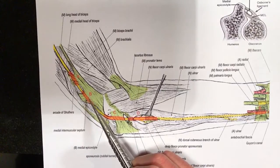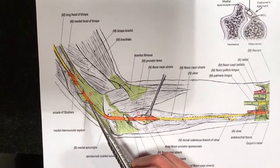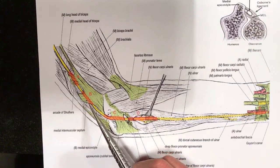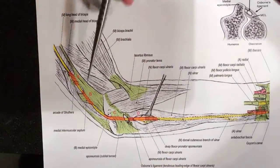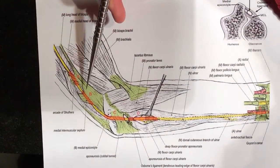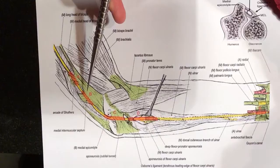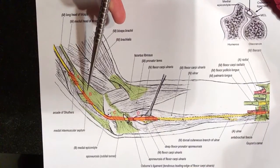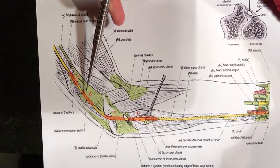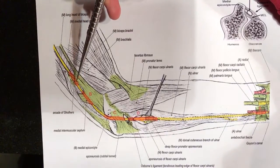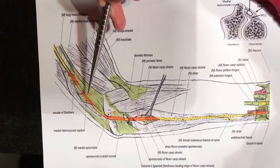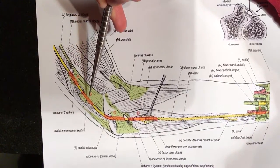Next up is the medial intramuscular septum itself. It can be sharp and compress the nerve directly. If you palpate it with your finger, it's a very sharp edge and quite rubbery and thick. It is often resected and cut out to prevent ulnar nerve compression at this point.